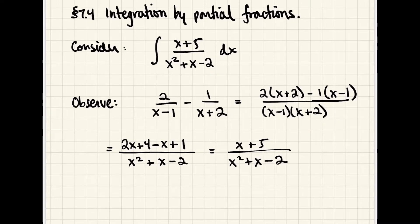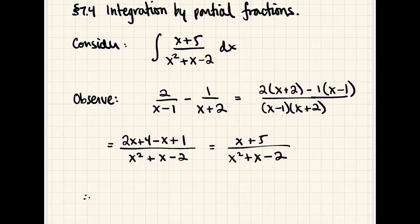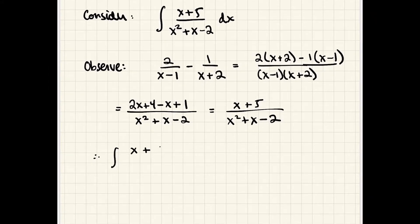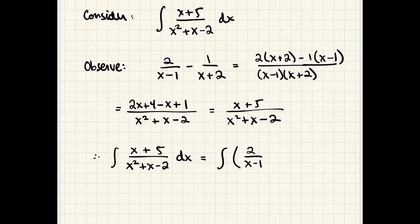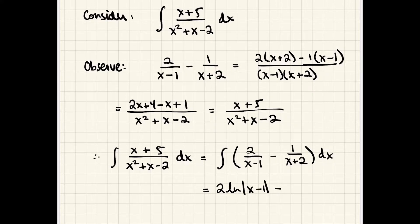You might recognize this answer — x plus 5 over x squared plus x minus 2 — as the integrand that originally initiated this conversation. So algebraically, if we're trying to integrate x plus 5 over x squared plus x minus 2, we can replace it with 2 over (x minus 1) minus 1 over (x plus 2). Then we can integrate those two pieces quite easily: the first term integrates to 2 ln|x minus 1| and the second to ln|x plus 2|. And we're done.